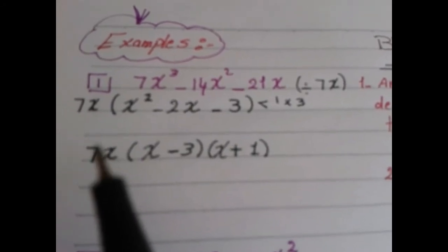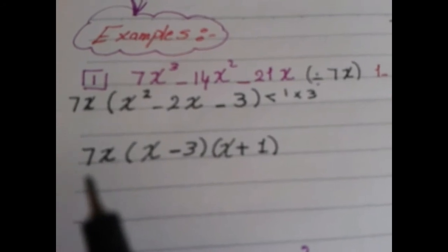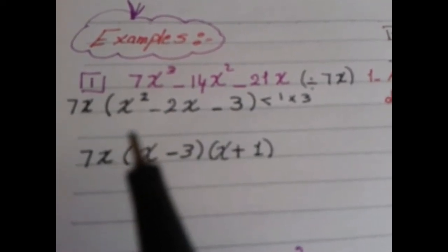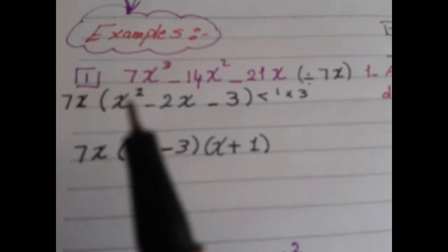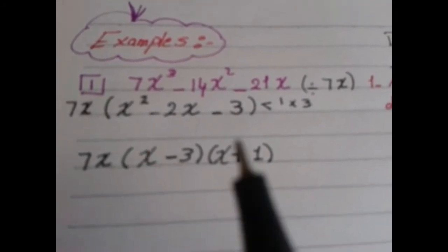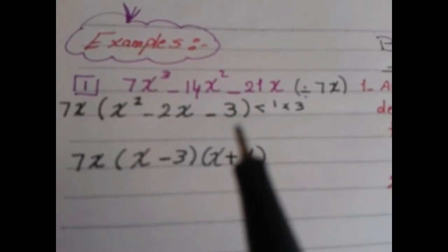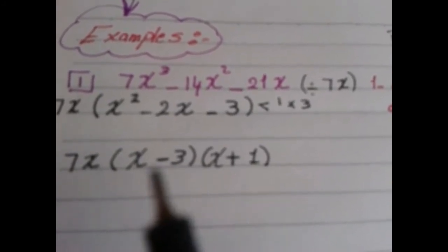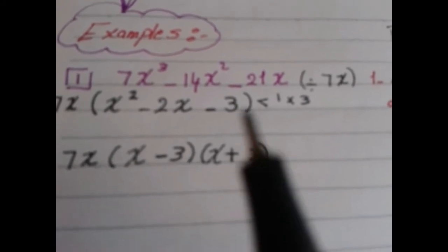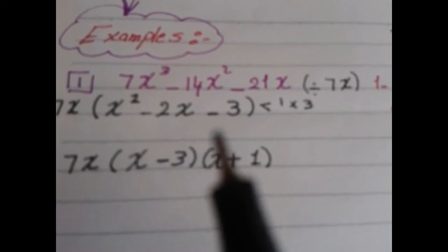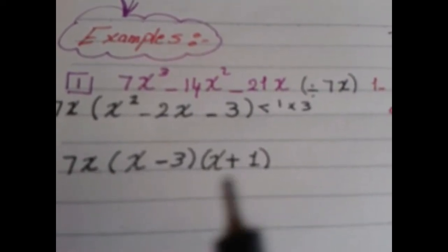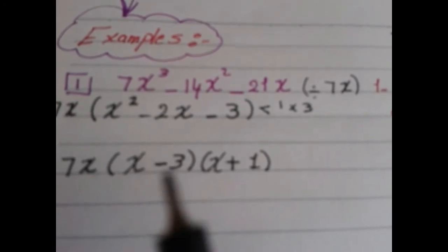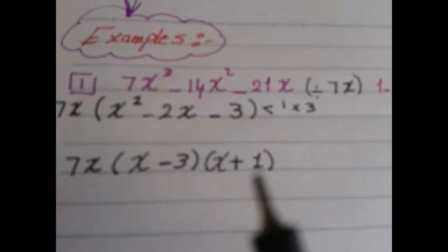Keep 7x in front of the bracket — that is very important. Now factorize the inside bracket the traditional way: open two brackets. x squared gives x times x. The factors of 3 are only 1 and 3. The last sign is negative, so use different signs. The bigger number takes the middle sign, which is negative, so 3 is negative and 1 is positive: 7x(x - 3)(x + 1).